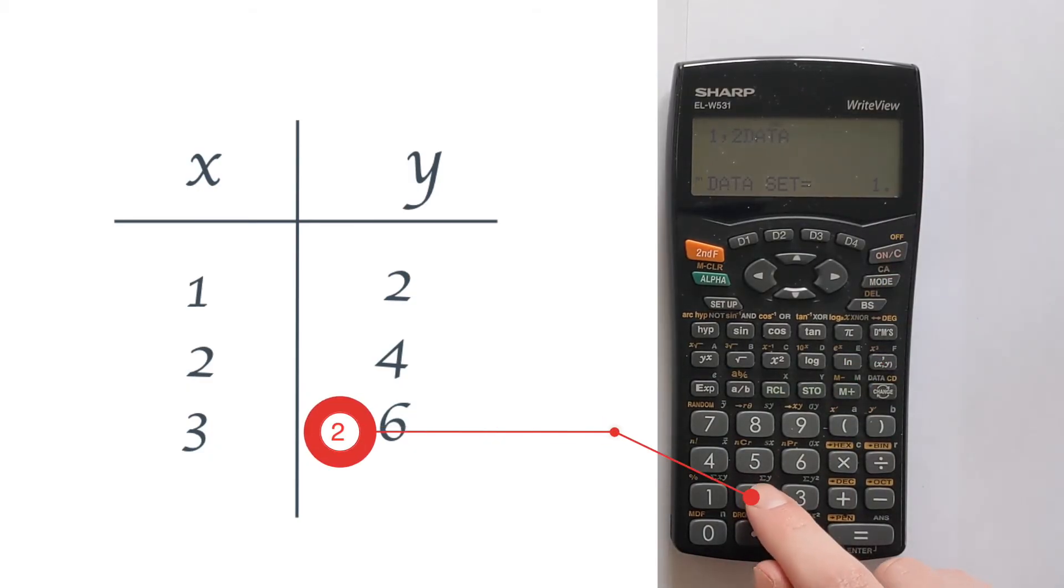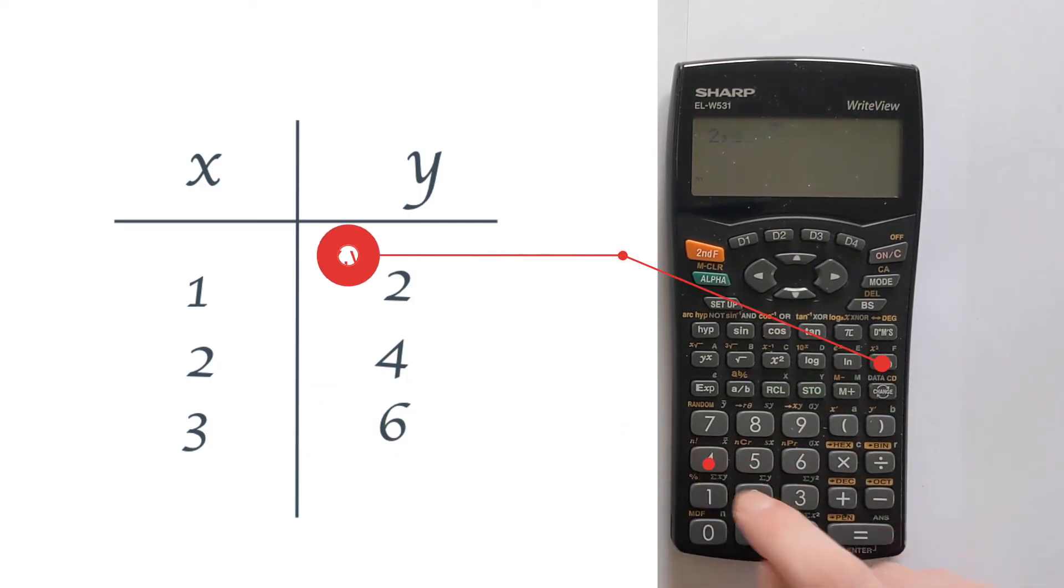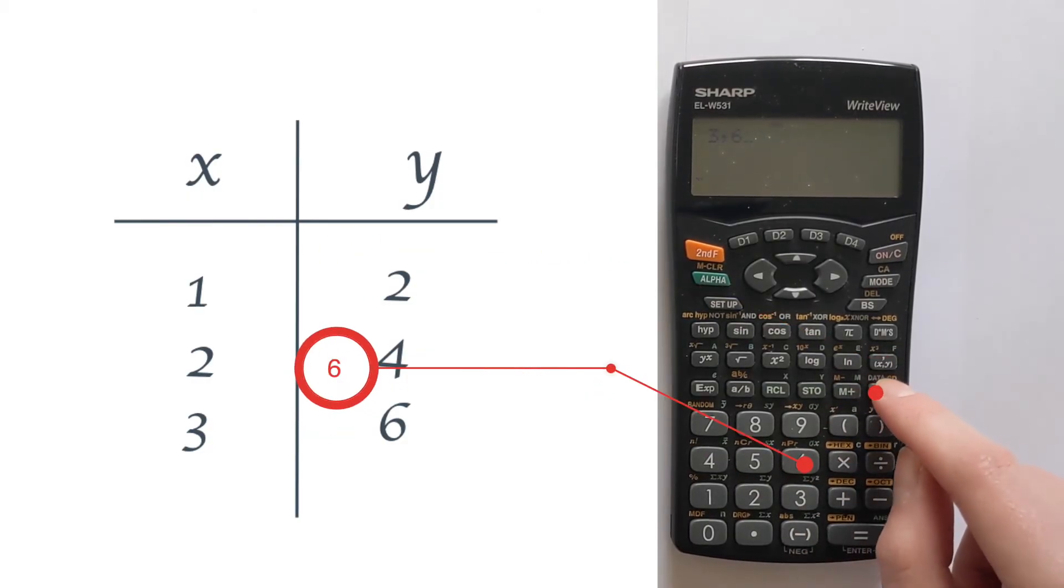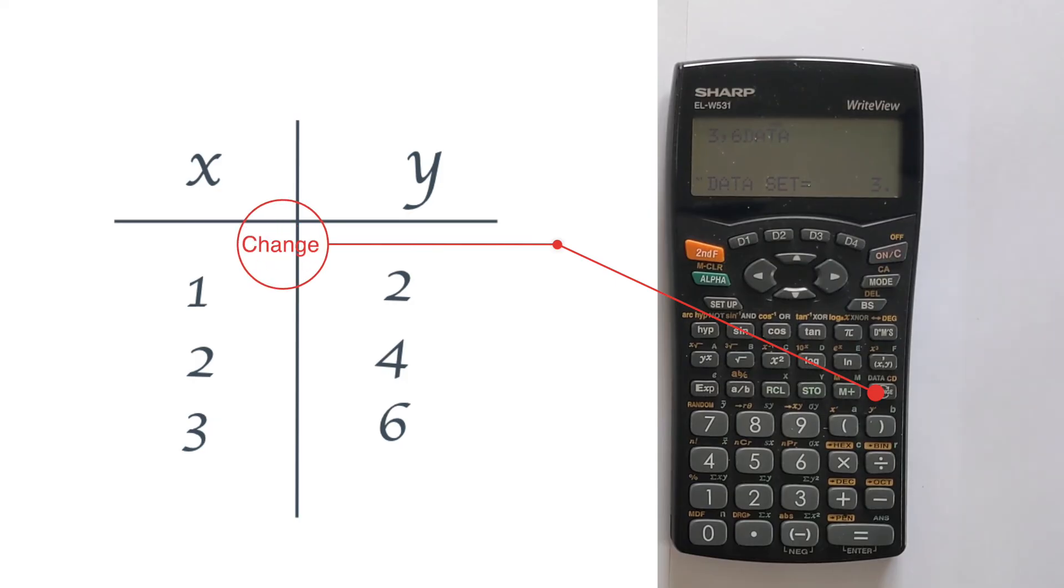Then we can put the next one in, which is two comma four, then we press change, that's now saved in the memory. And then we want three comma six, and then change, and that now puts that into the memory.